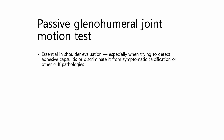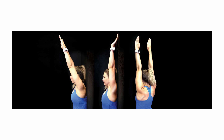Let's talk about the passive range of motion test, specifically for the glenohumeral joint. This test is essential in shoulder evaluation, especially when trying to detect adhesive capsulitis or discriminate it from symptomatic calcification or other cuff pathologies. Many clinicians perform active or passive shoulder flexion and assume they're assessing the whole joint, but these tests have a blind spot. Because flexion movements allow for scapular compensation, even when the glenohumeral joint is stiff, patients can still lift their arms by using scapulothoracic motion. As a result, flexion may appear improved or normal when the true glenohumeral motion is still limited — easily leading to misinterpretation. That's why passive flexion alone is not sensitive enough to detect early or subtle capsular restriction in the glenohumeral joint.